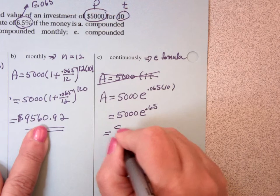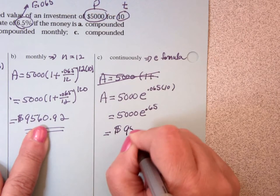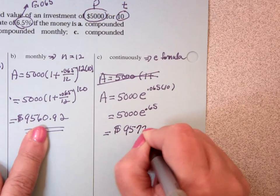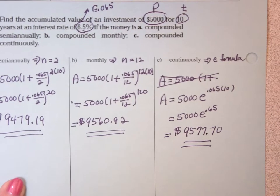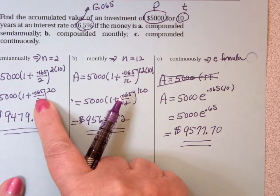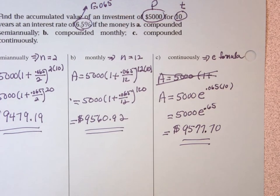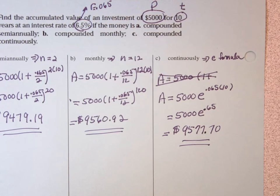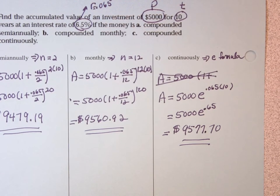But notice they're all in the same area. And you're going to say, well, why would they all be in the same area? Well, because I'm starting out with the same amount of money. I've got the same interest rate. I've got the same time. The only difference is the number of times I'm compounding. So those numbers should be pretty close together.